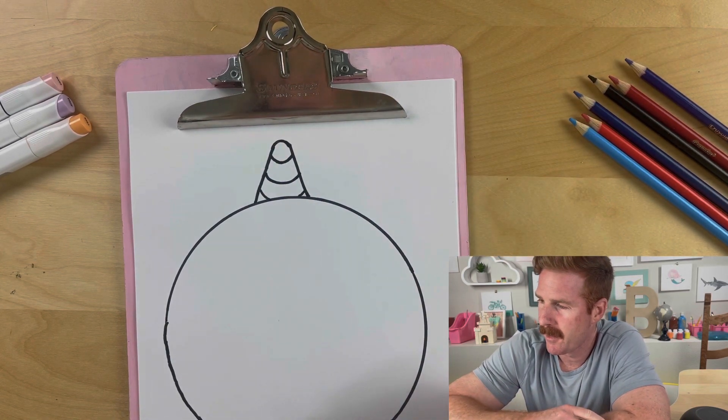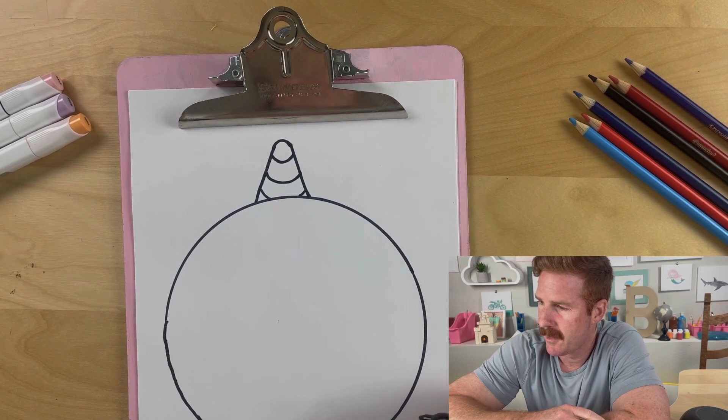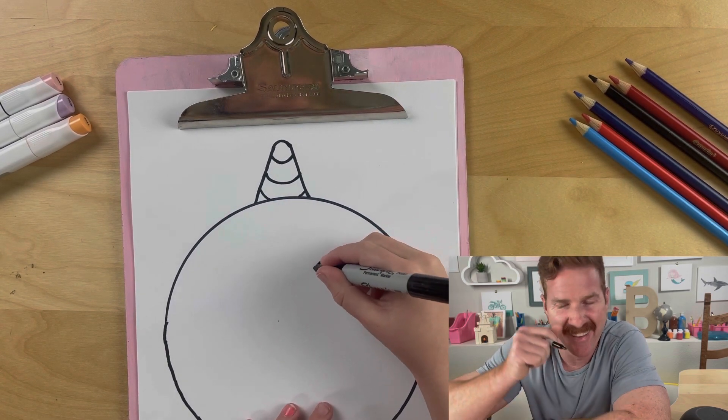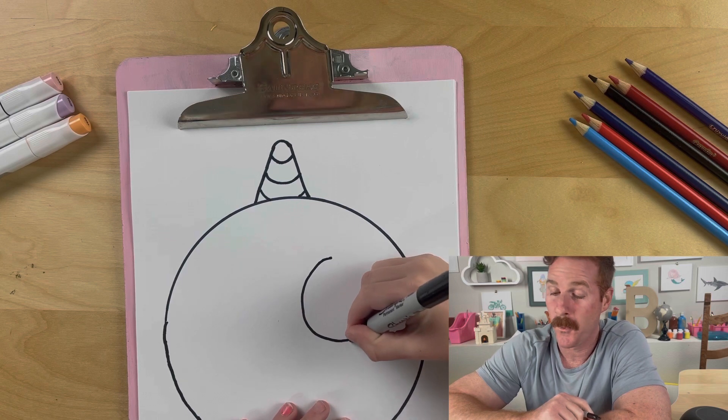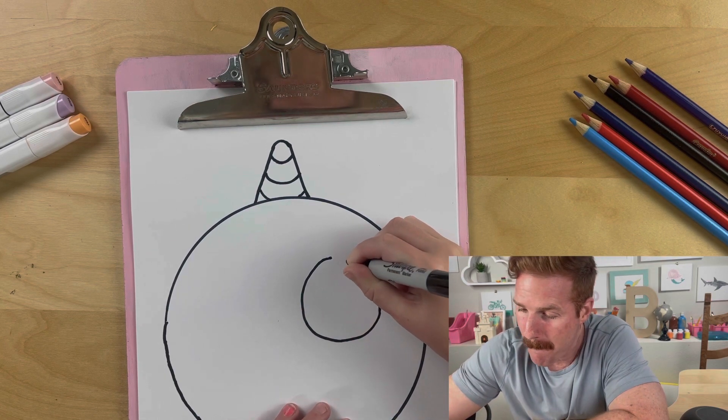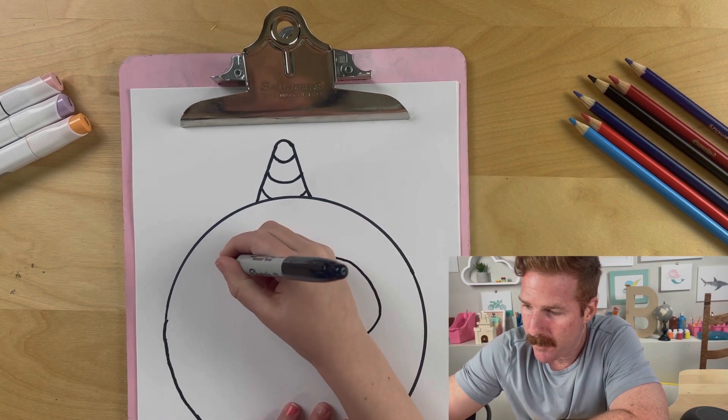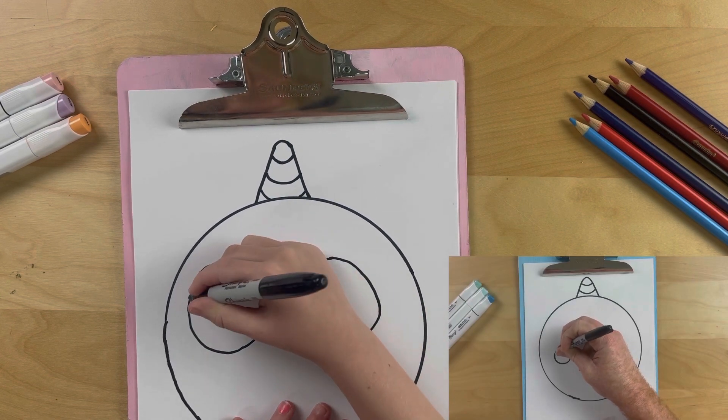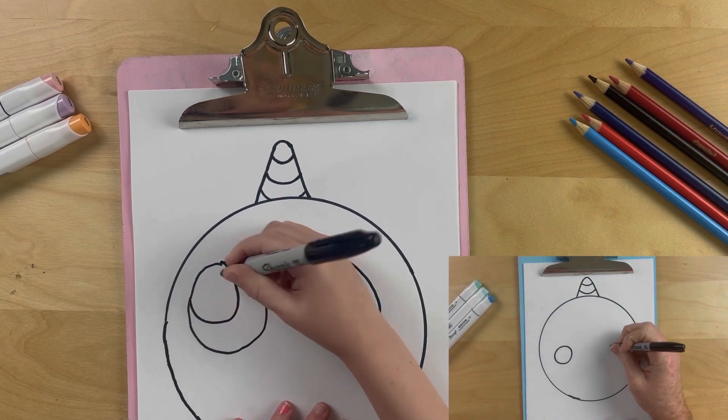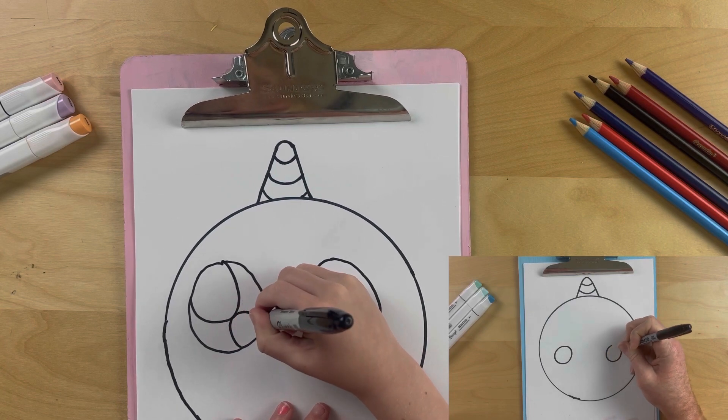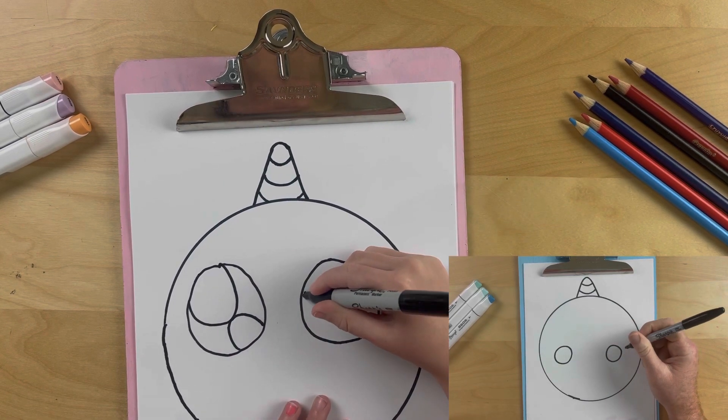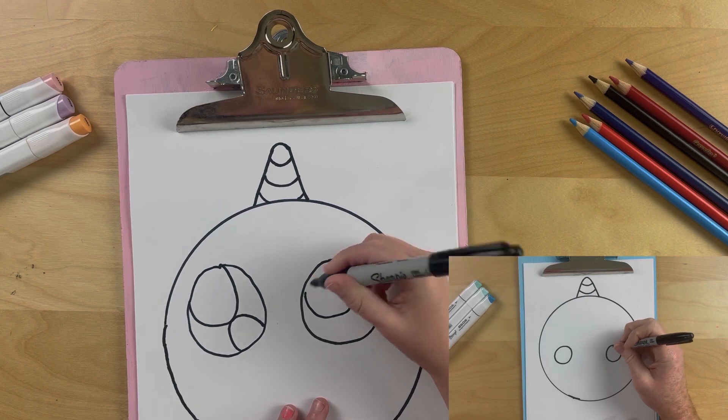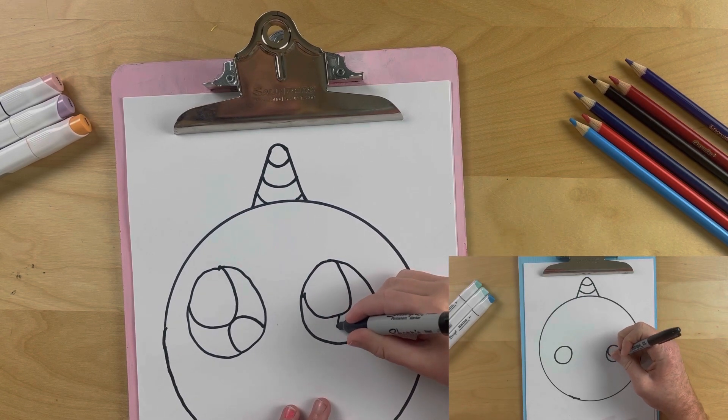Now we're gonna draw the face. I'm gonna do big eyes. Big white circle. I'm gonna do a little circle, like that. And then again. And again.